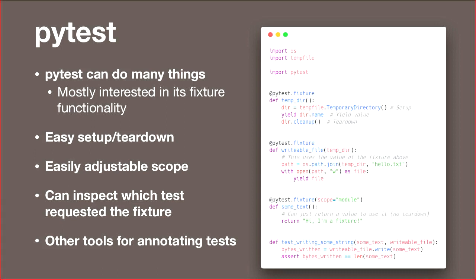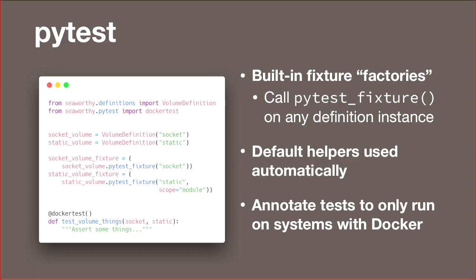PyTest does lots of things, as you probably know, but we're mostly interested in the fixtures. The various definitions have a PyTest fixture method on them, so you can just create a PyTest fixture from that, and then it's basically just available in your test. There's also an annotation you can add called DockerTest — if Docker is not on the machine, it won't run those tests, which is quite nice.